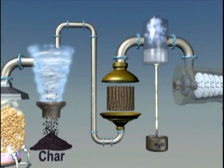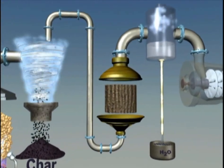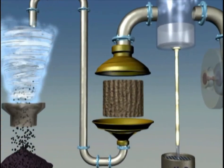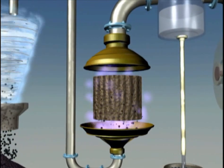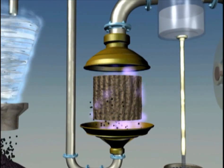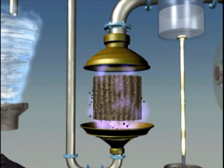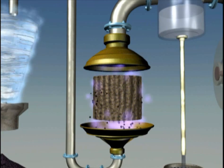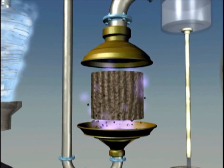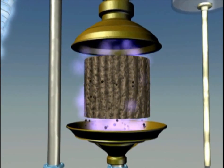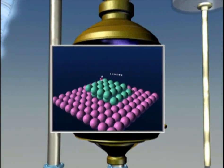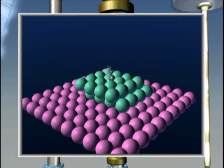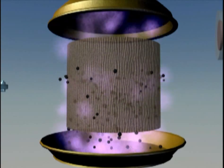Tars and methane are also produced. Their quantity and composition depend on the gasification environment. Tars are high molecular weight organic compounds. If they are not removed, these tars will contaminate downstream equipment and inhibit fuel synthesis. One way to remove methane and tars is by using special catalysts to convert the compounds into additional syngas, thus eliminating the methane and tar problem while also improving the efficiency of the process.